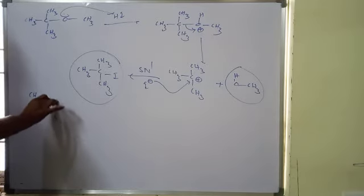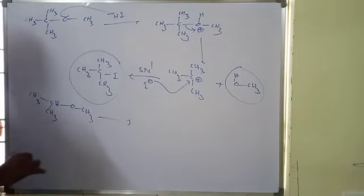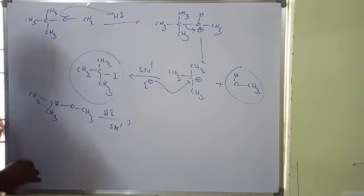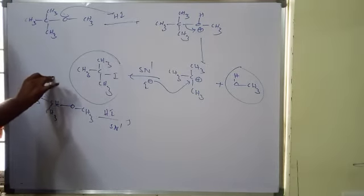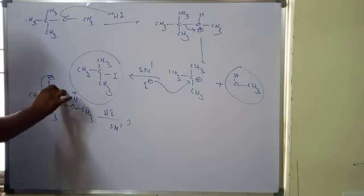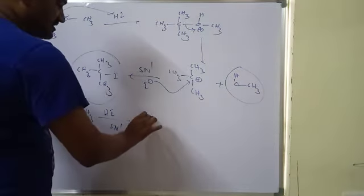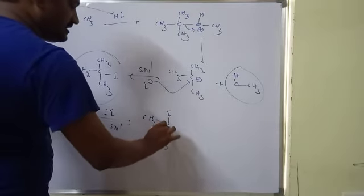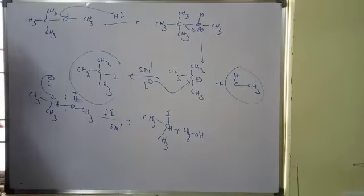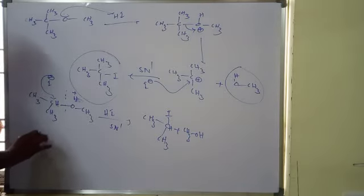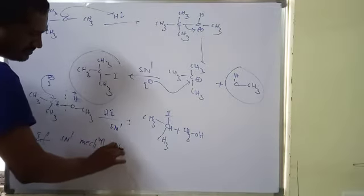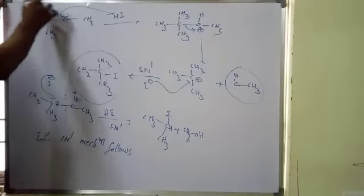Take these type of groups also. In such case, here what happened — HI follows SN1 mechanism. I⁻ will be attacked with the more hindered side, and H will be attacked with the less hindered side. H will be attacked on this side, cleavage takes place — CH3C(CH3)2I — less methanol is formed. So like this, SN1 mechanism follows.